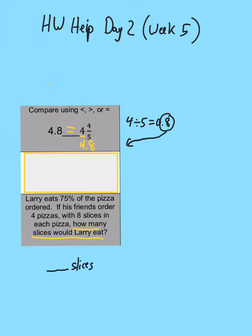Now the thing is, it says he ate 75% of the pizza. Remember we said that of means times. So it's going to be 75% times something. But we have to figure out how many total slices there were.